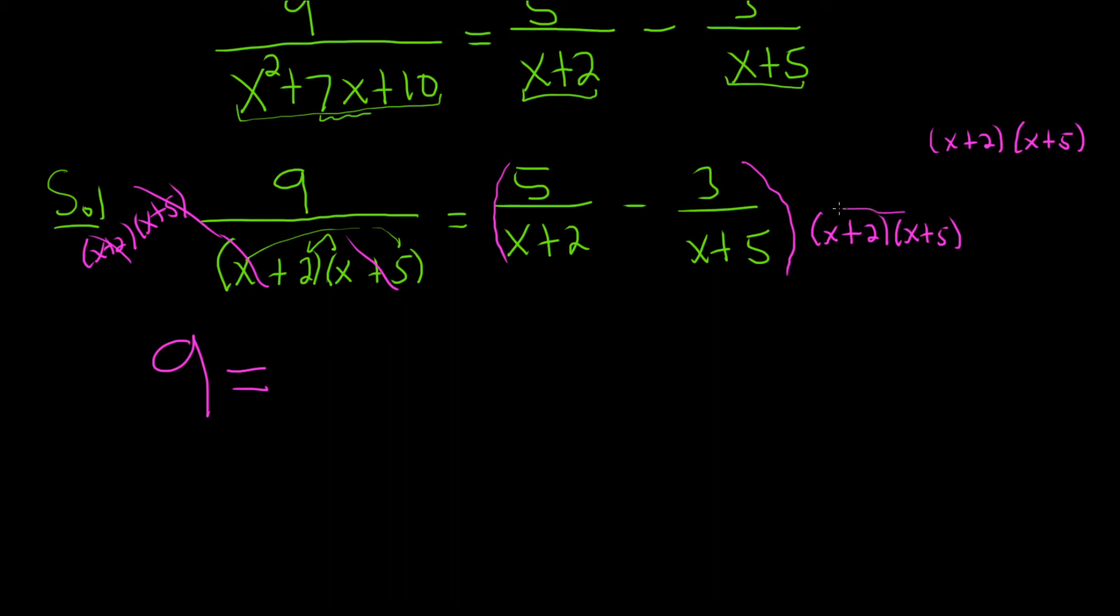And now let's go ahead and distribute this. So I'm going to go ahead and actually show the work. So it's 5 over x plus 2 times x plus 2, x plus 5, then minus 3 over x plus 5, x plus 2, x plus 5.